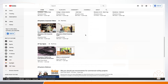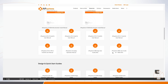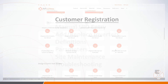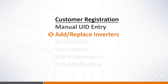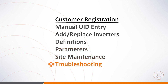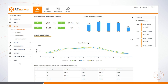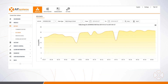We highly encourage you to watch our detailed EMA video and read our EMA User Guide for more information on EMA system use, including the finer details of new customer registration not covered here — such as the process for manual entry of inverter UIDs, how to add or replace inverters on existing sites, definitions of certain settings parameters and available tick boxes, as well as site maintenance and troubleshooting options. There is a tremendous amount of functionality available to installers who utilize AP Systems' robust EMA platform.